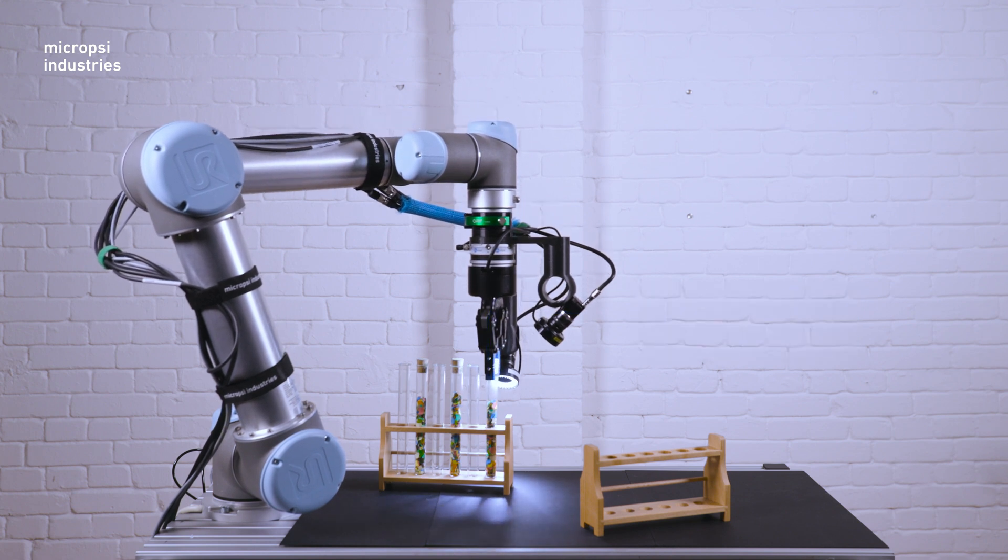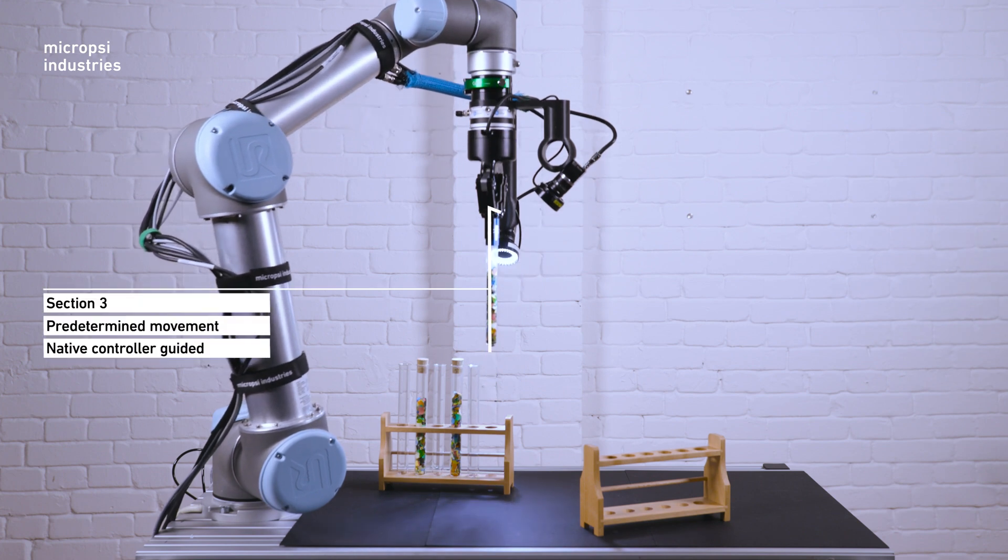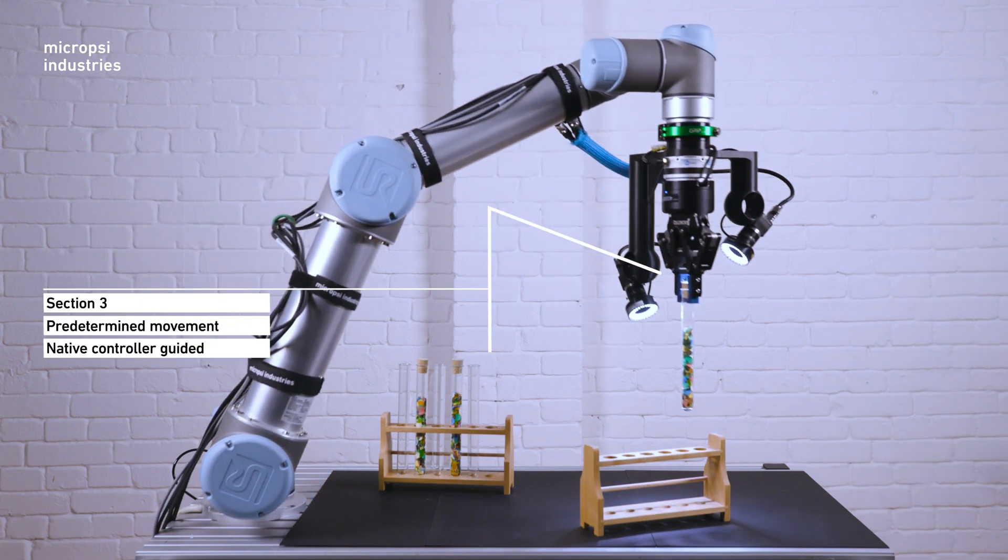In section 3, the robot picks the beaker and brings it to the other tray. This movement the native controller handles.